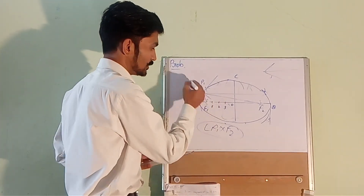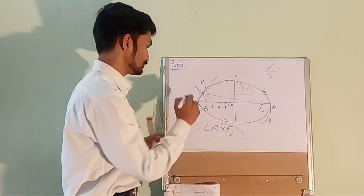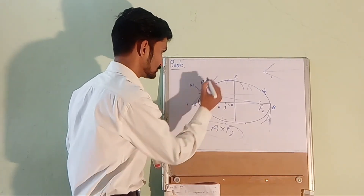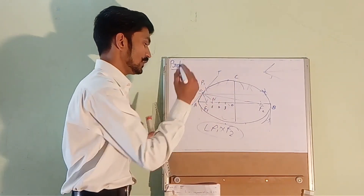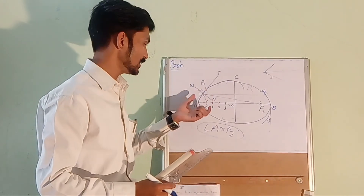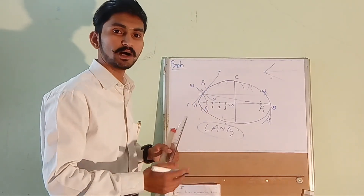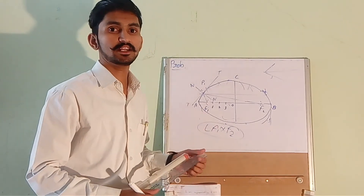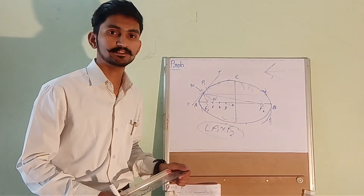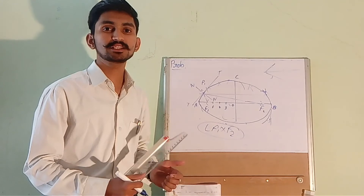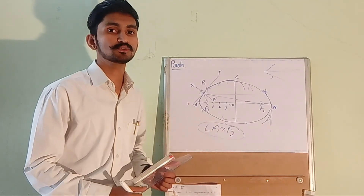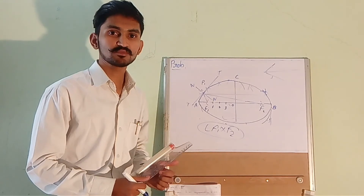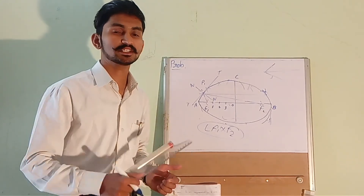The line perpendicular to the normal NN is the tangent TT at the point on the ellipse 25 mm above line AB. This is how you construct an ellipse using the arc of circle method. If you like the content, please click the like button, share this video with your colleagues, and don't forget to subscribe. Thanks for watching — you can ask any questions in the comment section below.